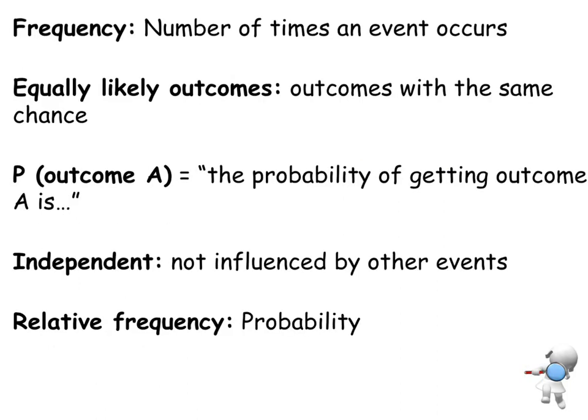Frequency. We just had a look at that. That was the number of times events occurs. Equally likely outcomes. Now this is an important one. This is often something students can get a little bit confused with. If I'm talking about equally likely, it means that all the outcomes have the same probability. So for example,